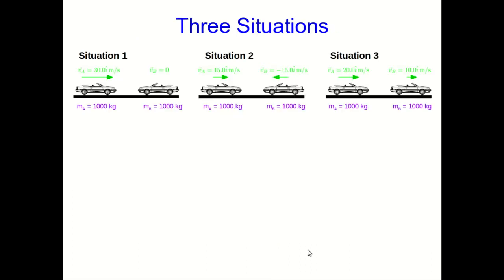Let's look at three very similar situations. Here we have identical cars about to crash into each other, and I've set it up so that there are three different situations with their velocities. So in Situation 1, car B is stationary and car A is coming at it at 30 meters per second.